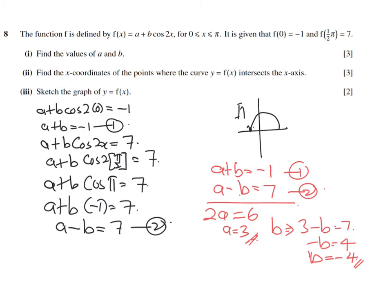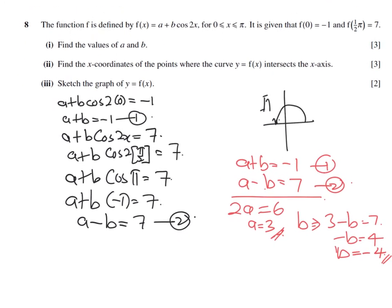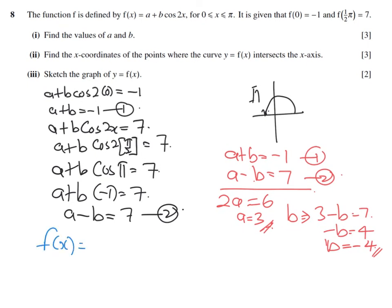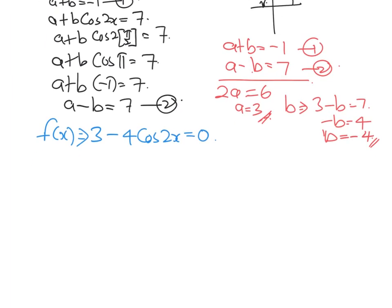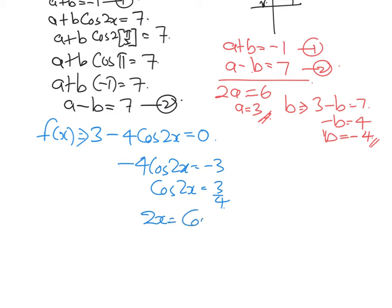For part 2, find the x-coordinates where the curve y = f(x) intersects the x-axis. When it cuts the x-axis, y = 0. Setting y = 0 with f(x) = 3 − 4·cos(2x): negative 4·cos(2x) = negative 3, so cos(2x) = 3/4. Now find the x values.